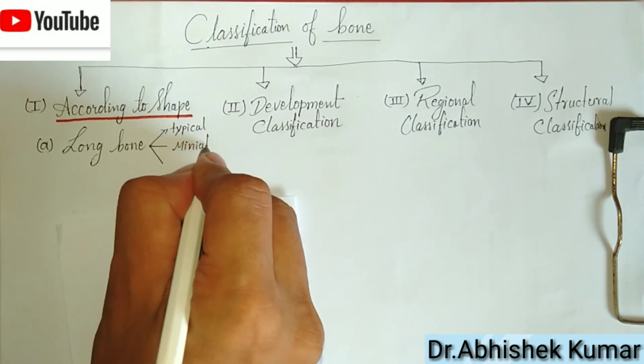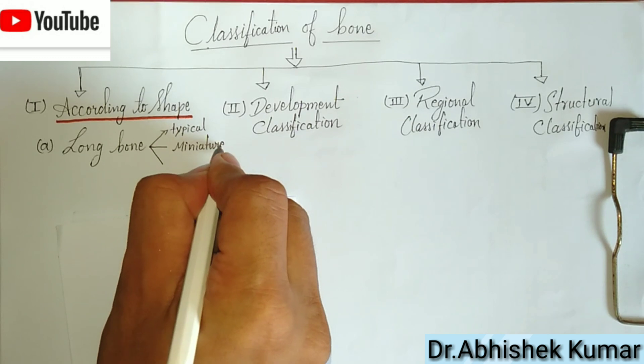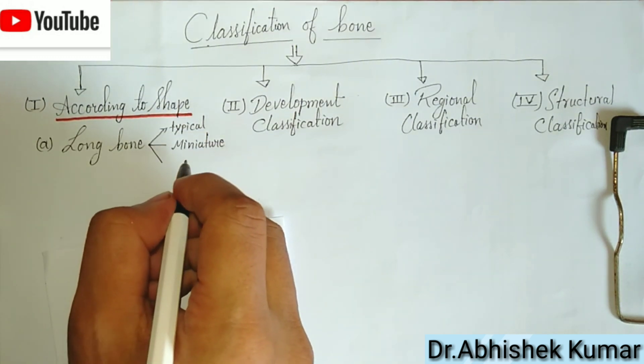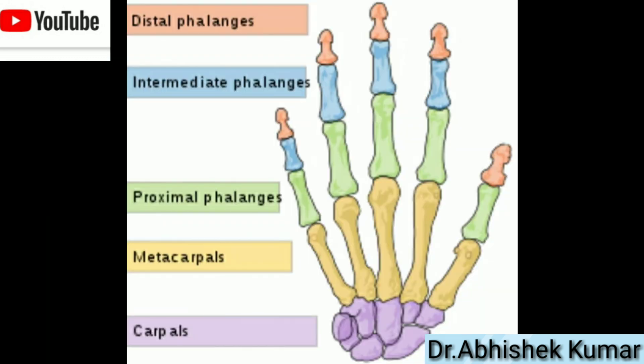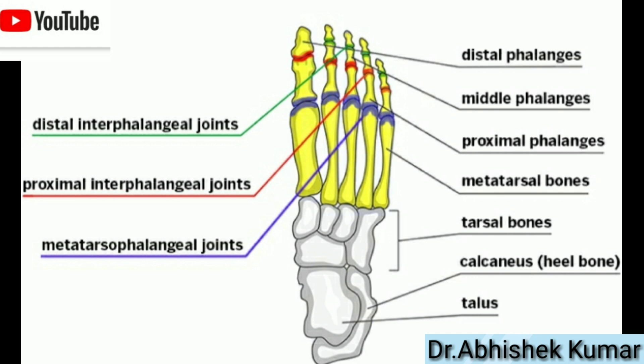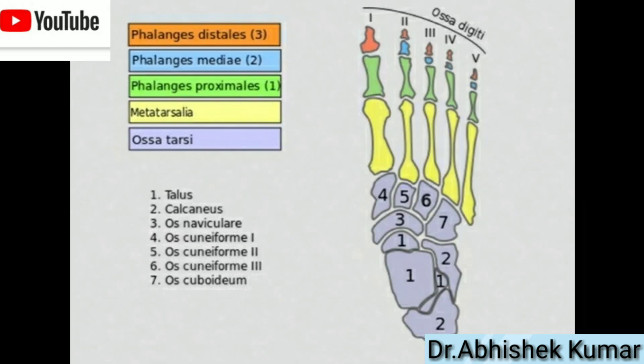Next, the miniature long bone. It has only one epiphysis. Examples include metacarpal bones, metatarsal bones, and phalanges, as you can see on the screen.